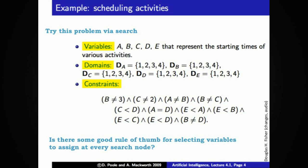So you might go through this exercise to try and find some good rules of thumb for selecting variables at each search node as you expand the search tree. That would reduce the amount of work that a search algorithm would have to perform in order to solve the constraint satisfaction problem.